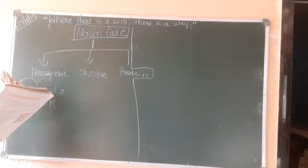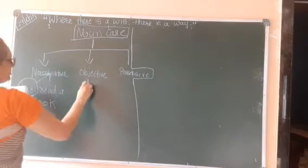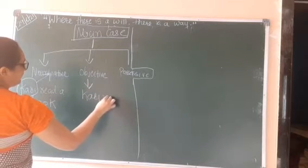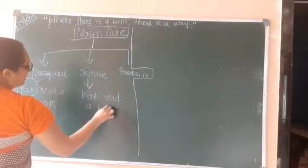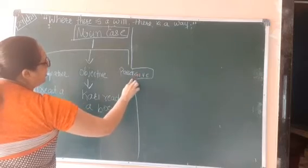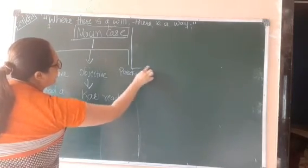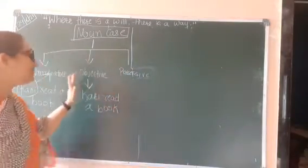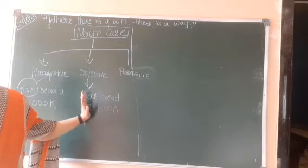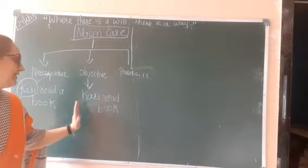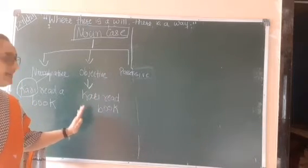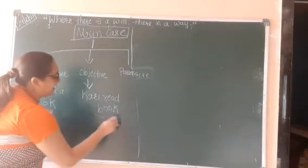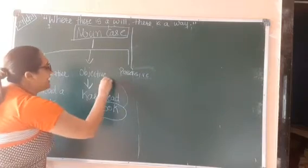Now if we talk about objective case, same sentence: Carry read a book. Objective case is about the direct object — verb plus what. In this sentence, Carry is the subject. What is she reading? A book — so book is the direct object, and it comes in objective case.